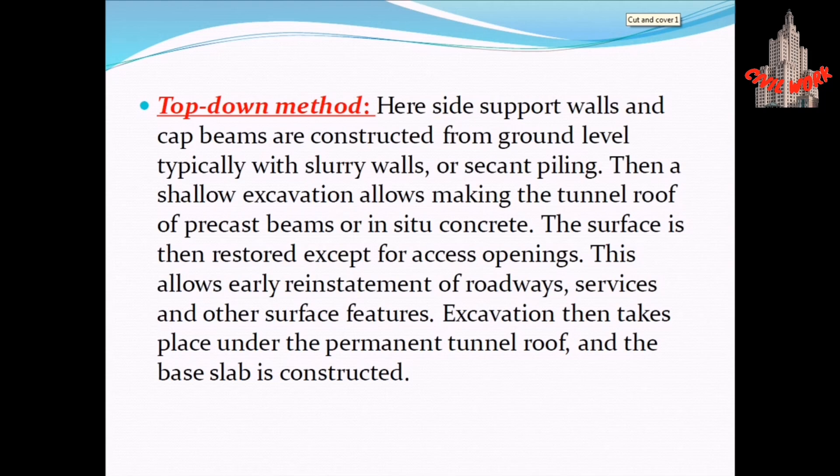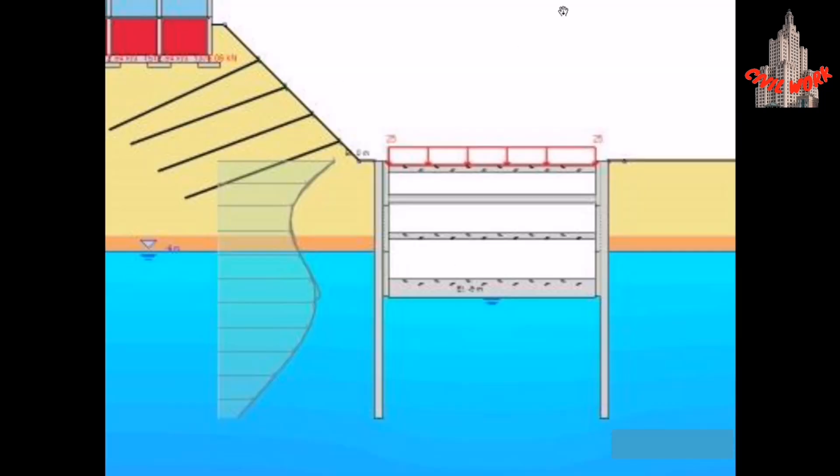The top-down method: side support walls and cap beams are constructed from ground level, typically with slurry walls or secant piling. A shallow excavation allows making the tunnel roof of precast beams or in-situ concrete, and the surface is then restored except for access openings — allowing early reinstatement of roadway services and other surface features. Excavation then takes place under the permanent tunnel roof, and the base slab is constructed. In this method, there is less disturbance to the general public, as work continues underground while vehicles continue using the roadway.